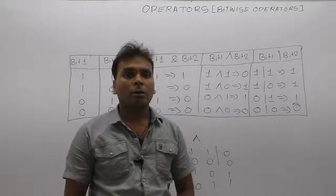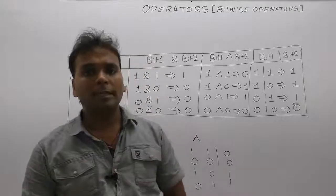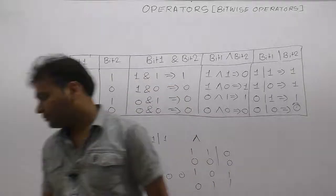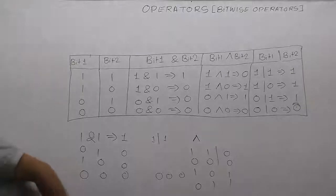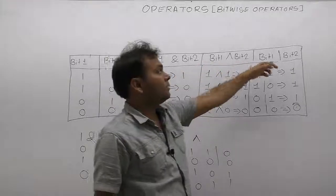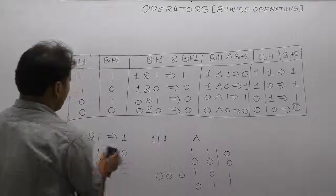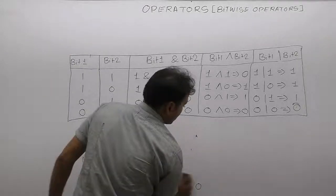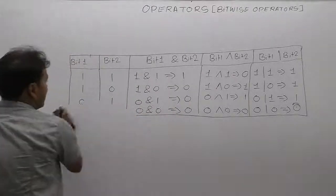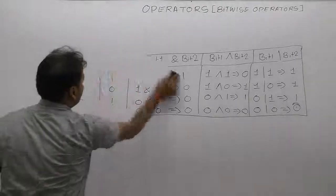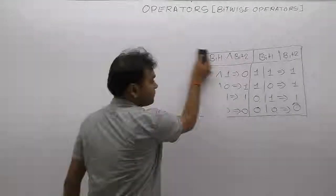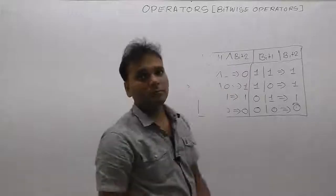The priority order for bitwise operators is: bitwise AND has the highest priority, then XOR, then OR. These are the properties of bitwise AND, XOR, and OR operators. We are testing some examples regarding these operators.